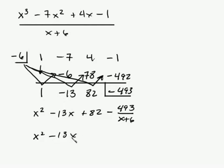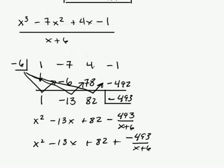Or you can write it like this: x squared minus 13x plus 82 plus a negative 493 over x plus 6. So either answer would be acceptable. And I've got enough space for one more problem.